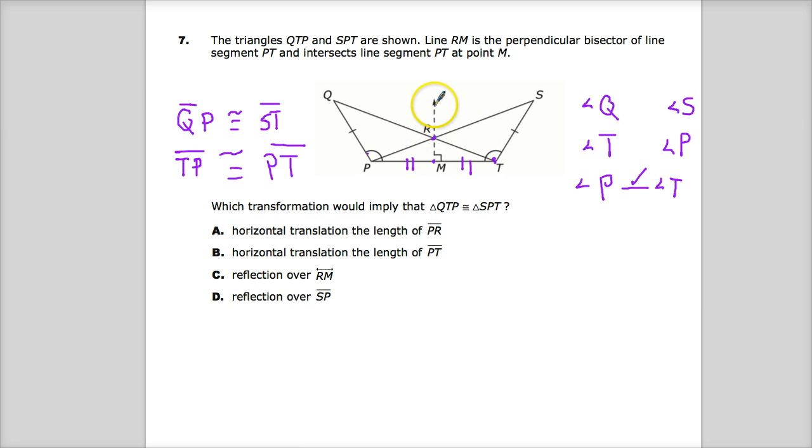A reflection over RM. That's interesting. So if I use this as kind of a pivot point and I reflect this over here, it will fall right on top of this. This would fall right on top of this, and then this point would fall right on top of this. So you'd end up with that right there. And you'll notice now that that's definitely implying that it's the exact same shape, or that they are congruent at that point. So I would say strongly that a reflection over RM gives me the information that I need to make that determination.